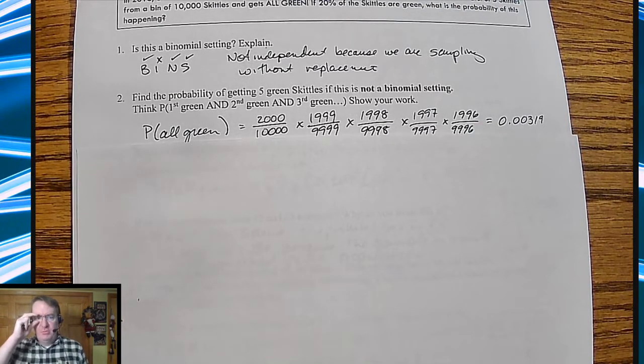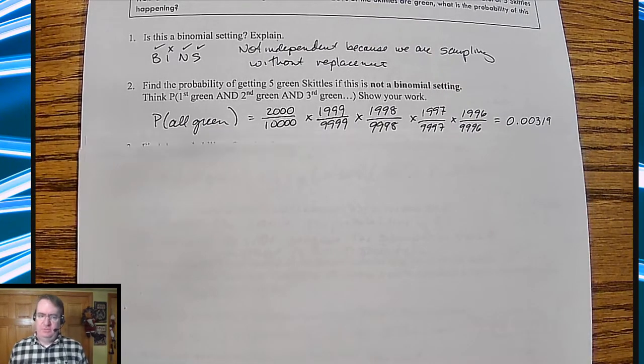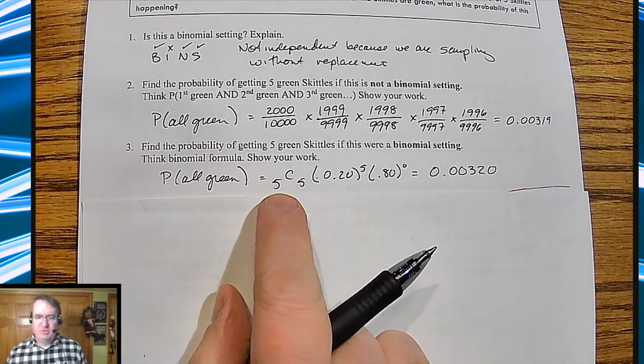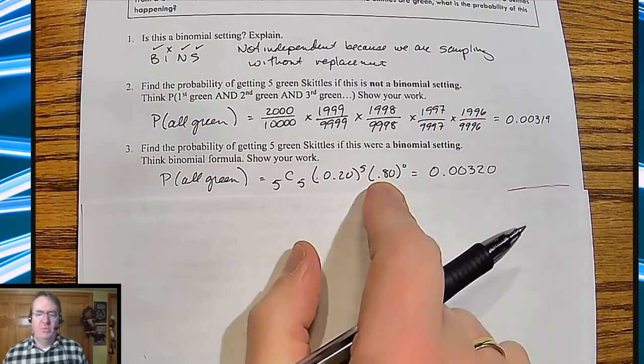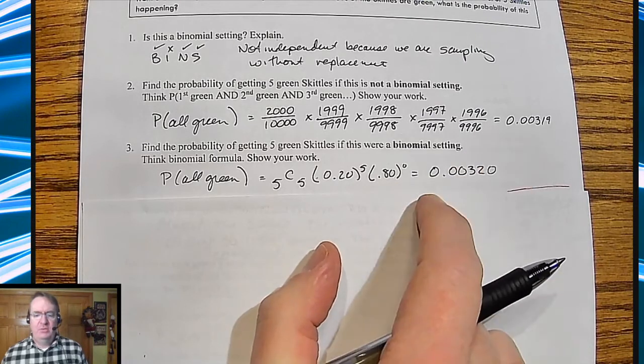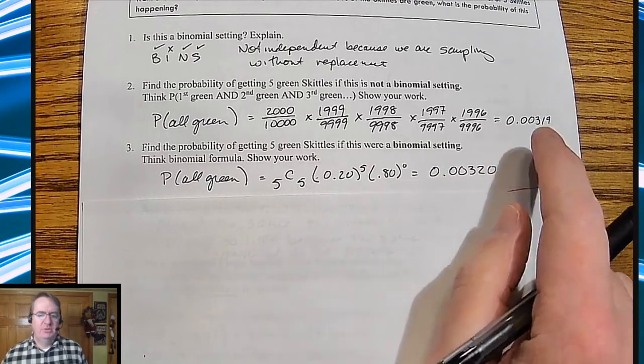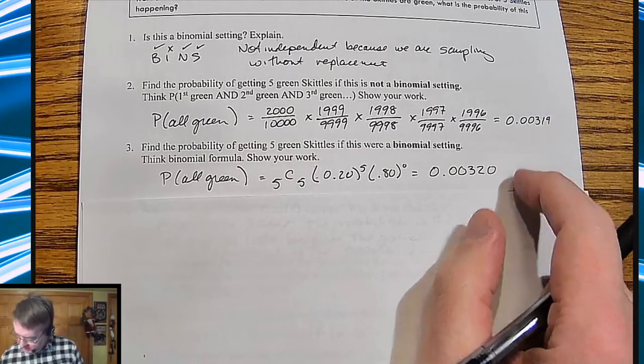All right, great. Now if you assumed it was a binomial setting, we would do this, right? So you would have probability of all green, five choose five. We're going to assume it's going to be 0.2 to the fifth power. This is going to be a one, and you get 0.00320, which is almost that. In fact, you're only off by what would that be, one one-hundred-thousandth.